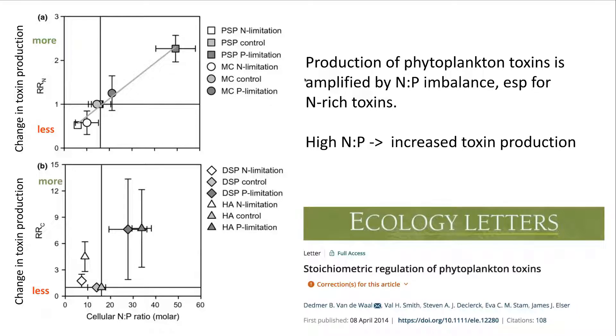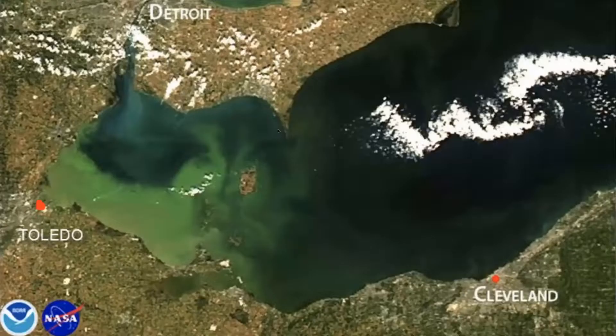Here's another example — my last one. Stoichiometric imbalance can also change the toxins that phytoplankton produce during algal blooms. Data compiled from the literature shows that when harmful algae in lakes develop imbalanced N-to-P ratios in their cells — because they're being supplied with nitrogen and phosphorus in imbalanced ratios — the production of toxins is elevated, especially the nitrogen-based toxins. Essentially, when cells have excess nitrogen, they make toxins with it. This is one reason why we get harmful algal bloom production and toxicity.